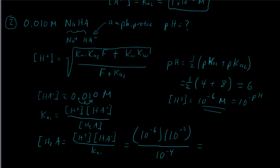When we multiply the exponents we add them: 10⁻⁶ times 10⁻² gives 10⁻⁸, divided by 10⁻⁴ equals 10⁻⁸ times 10⁺⁴, which is 10⁻⁴. So our H2A concentration is 10⁻⁴ molar — a small but nonzero amount.